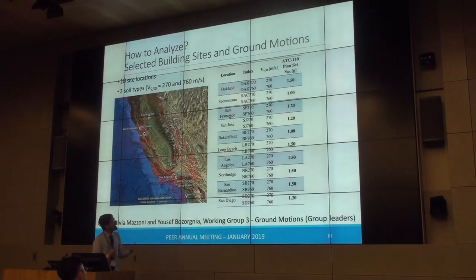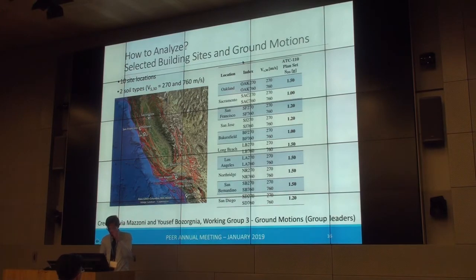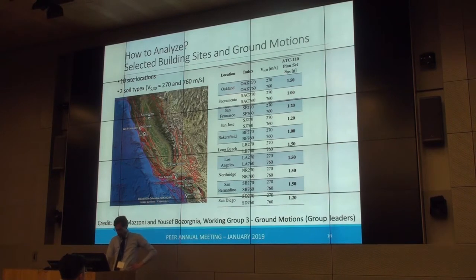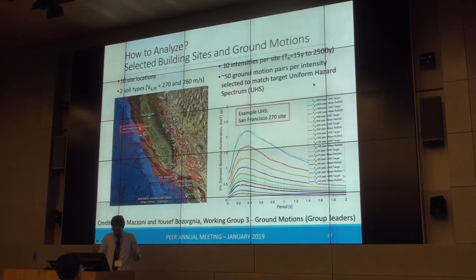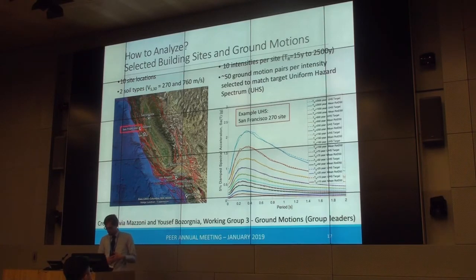Now I'll talk about how we're going to start analyzing these buildings, starting with the ground motions. This work is credited to working group three leaders Silvia Mazzoni and Youssef Bozorgnia. We're working with 10 site locations — four in Northern California, six in Southern California — with two different soil types. The last column shows the governing design loading for different ATC 110 plan sets, showing there will be a range of details and combinations of seismic hazard across different sites. Looking at one example site, San Francisco, we're working with uniform hazard spectra at 10 different intensities from 15-year to 2,500-year return period, where each intensity has approximately 50 ground motion pairs scaled to match the appropriate uniform hazard spectra.